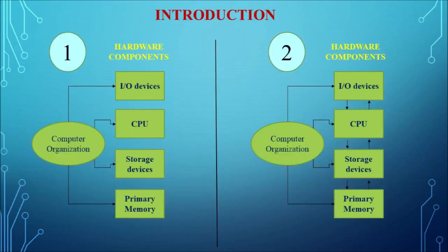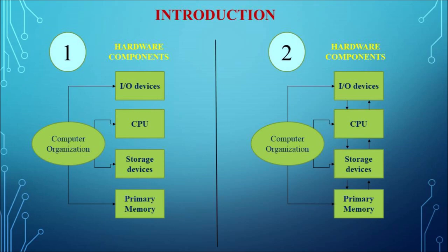In the introduction, computer organization mainly deals with the hardware components of a computer system. It includes the input/output devices, the CPU (central processing unit), and the storage devices — primary storage, secondary storage, and the primary memory (main memory). It is mainly concerned with how the various components of computer hardware operate and how they are interconnected to implement an architectural specification.